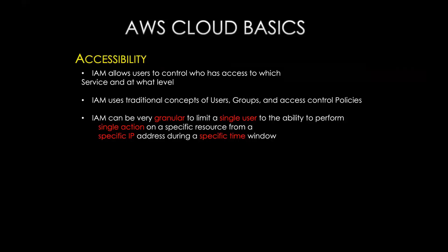IAM users follow the traditional concepts of user groups and access control policies. This is a concept you're probably familiar with regardless of background. IAM can be very granular — limiting a single user to the ability to perform a single action on a specific resource from a specific IP address during a specific time window. You can specify read-write access only, or maybe allow a user to upload only to a specific bucket. You can specify the single action using the Access Control List (ACL), and the IP address using security groups.